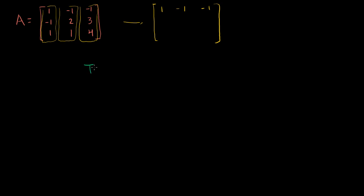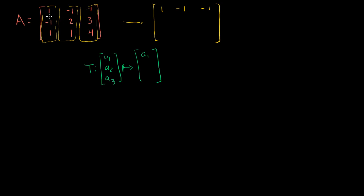I'm saying that my row operation is equivalent to a linear transformation on the column vector. So it's a transformation that's going to take some column vector A1, A2, and A3, and do something to them in a linear way. We're keeping the first entry of our column vector the same, so this is just A1. We'd want to make the second entry equal to 0, so maybe we replace our second row with the second row plus the first row.